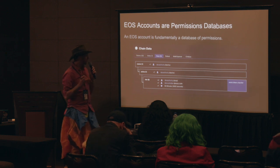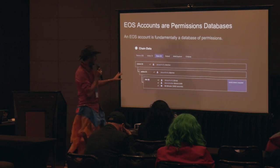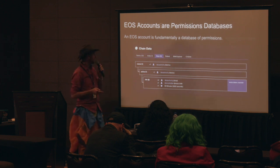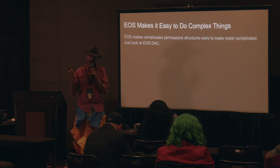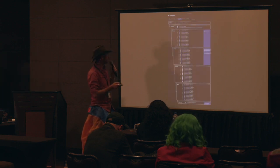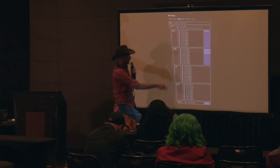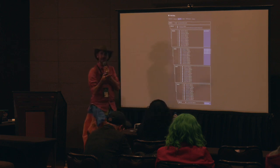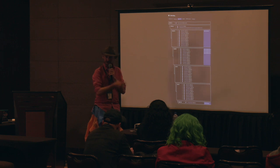EOS accounts are basically permissions databases — records of permissions to do certain things digitally. It makes it very easy to do complex, super-complicated permission structures, which is also really useful if you want to have a lot of different keys for different things. Here's EOS DAC, for instance — there are permissions to get chosen by elections. They have four or five different levels. It's really complex, but it's all at the base layer of EOS, which allows them to build things like this. It's simple for them to build, but really complex to understand.